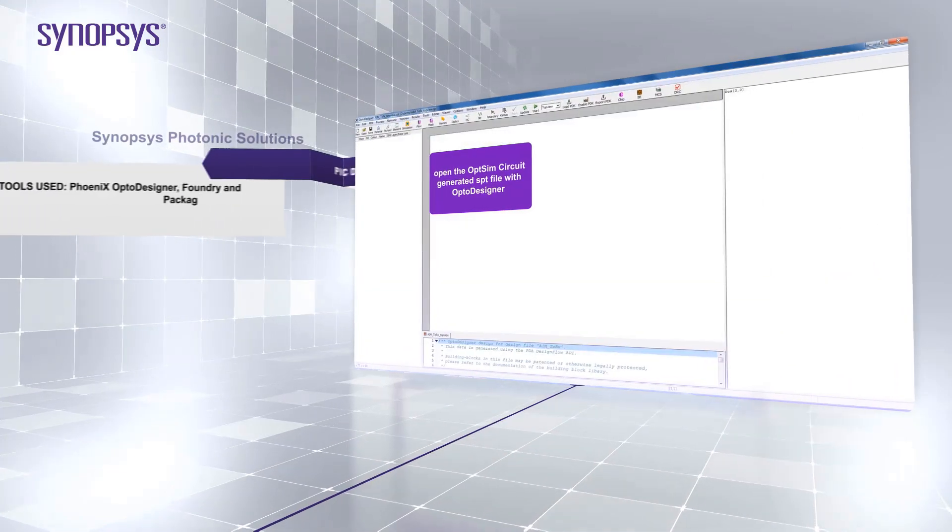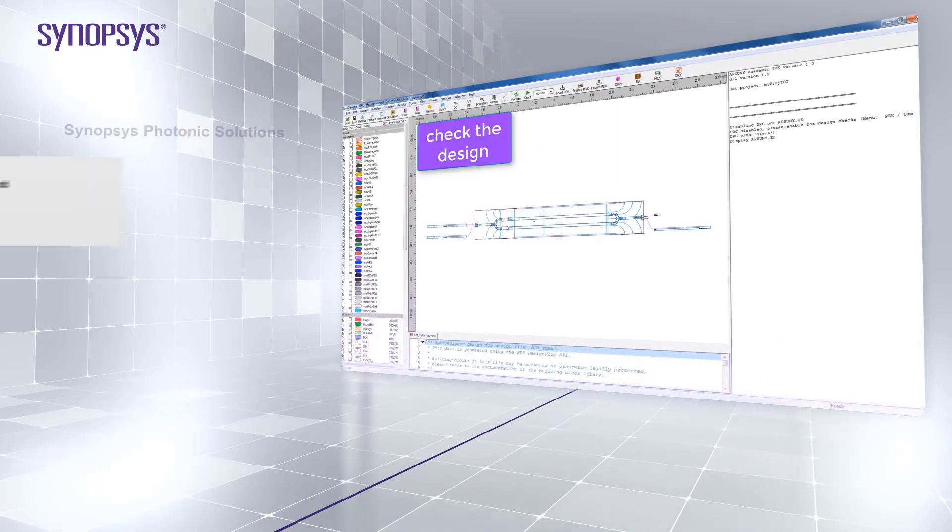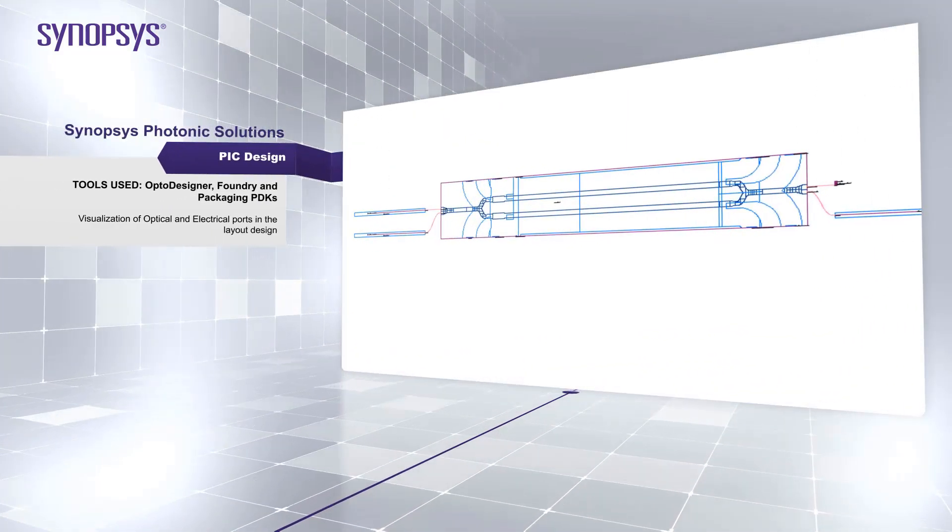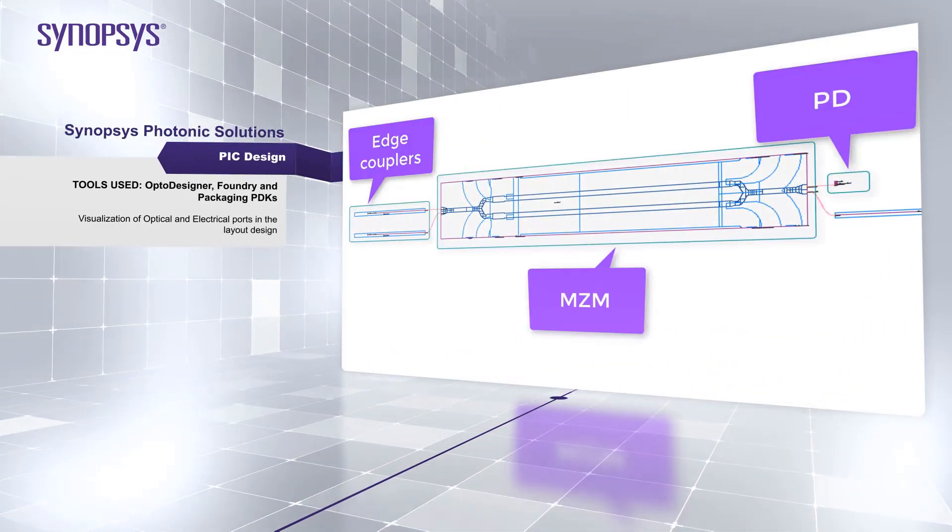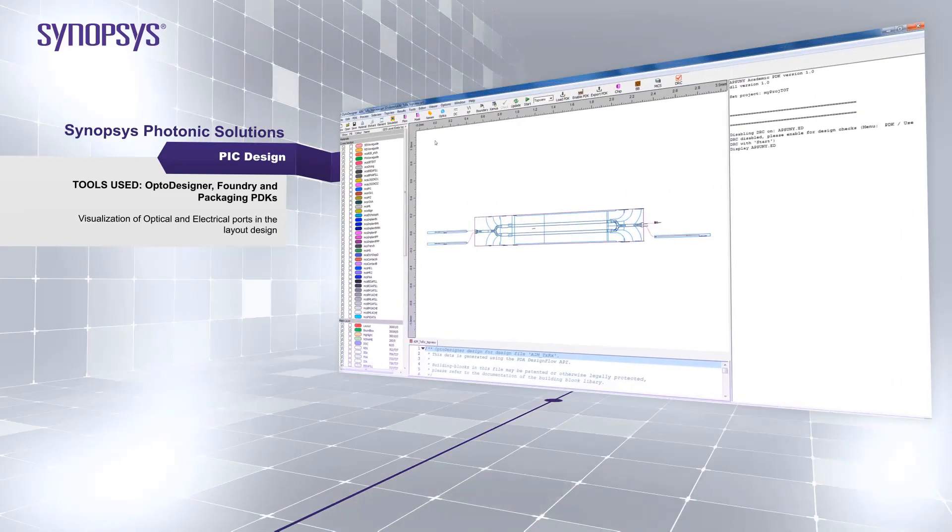Once your design is loaded in OptoDesigner, you can visualize the available optical and electrical ports with the user interface. You can also connect many other elements to complete your layout. The elements can be foundry-specific or taken from the element library. There you will find many additional passive components such as phase-aware connectors and delay lines.